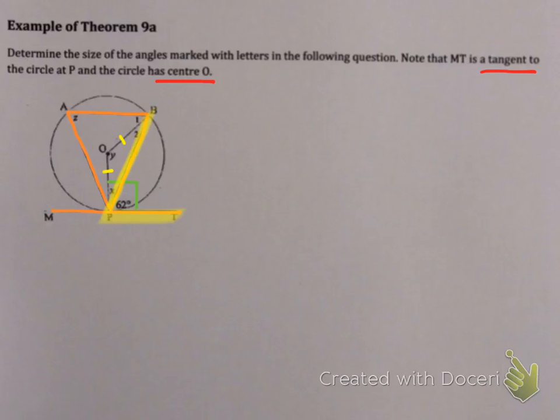Now what angles are those? Well, there's my angle between my chord and my tangent. It's 62 degrees. And it will equal the angle in the alternate segment, which is the angle at A, which is Z. So I can immediately start. Z equals 62. That is theorem 9A in action. The tan chord theorem.